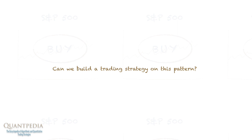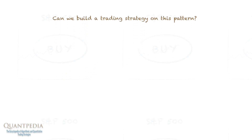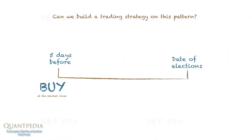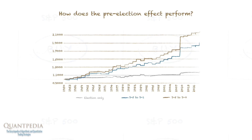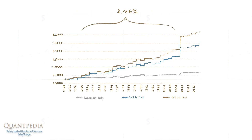Can we build a trading strategy on this pattern? The simple trading strategy consists of buying the S&P 500 in whichever form at the market close five days before the date of elections and holding until the close of the election day. The results of the mentioned strategy are visible in the figure 'US Pre-Election Drift on the S&P 500.' The strategy has, on average, a performance of 2.46% per election, or 1.23% per year.